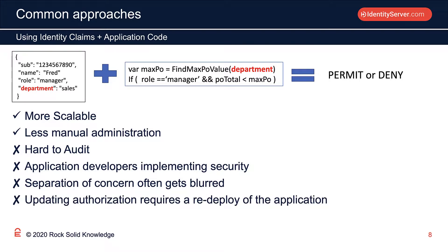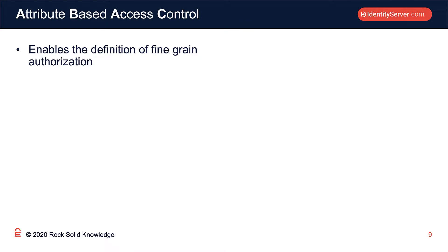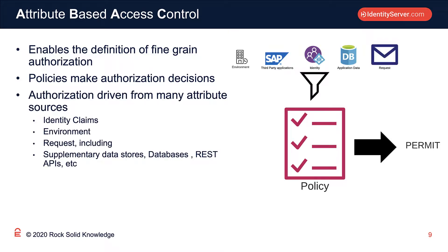Finally, if we want to change security policy, we have to redeploy the entire application. Attribute-based access control, or ABAC, delivers the same fine-grained authorization as the previous technique, but with a key difference: we introduce the concept of policies separate from the application logic. These policies make the authorization decisions. Policies are driven through attributes. Attributes could be identity claims, but they could be anything — they could come from the environment, the current date and time, the inbound request, or any data source reachable from inside your organization, such as the finance system, the HR system, your active directory, or an LDAP directory.